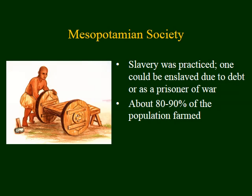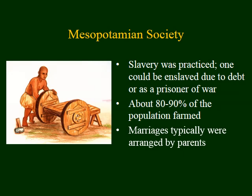Most young people did not marry for love, as marriages were most often arranged by parents. This typically involved an important contract between two families where the father of the bride would provide a dowry to the husband. Marriages were for the most part monogamous, but a husband could take a second wife. However, extramarital relations for women were not accepted. Divorce was relatively easy and accepted, and could be equitable, particularly if a husband had been convicted of wrongdoing. However, for the Mesopotamians, a woman's proper place was in the home.